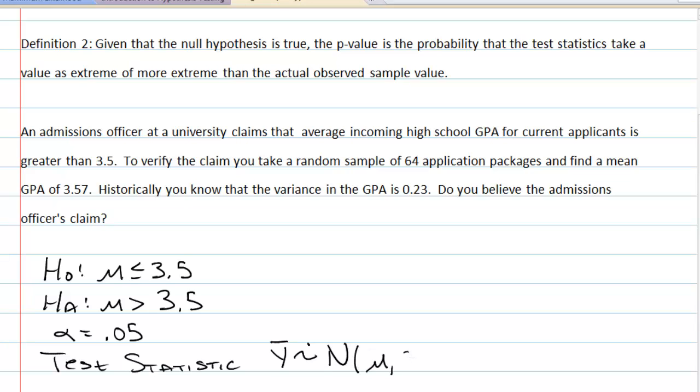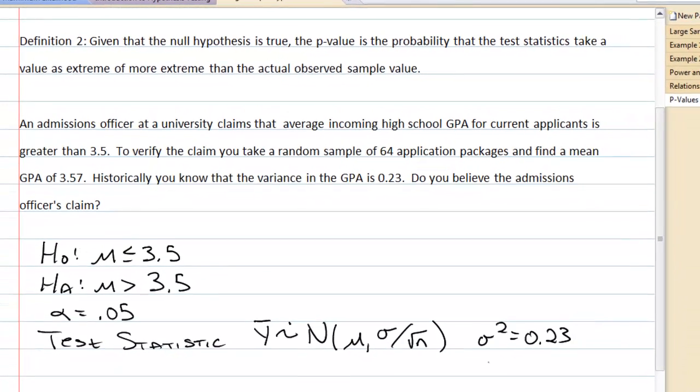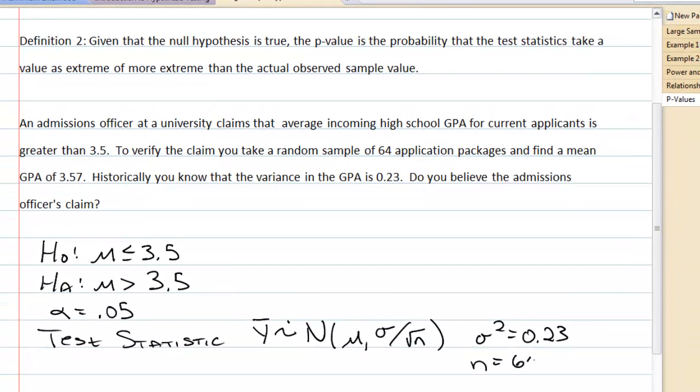It's approximately normal by the central limit theorem. And the mu is going to be sigma over square root of n. In this case, we know sigma squared is 0.23. And we know that n is 64.